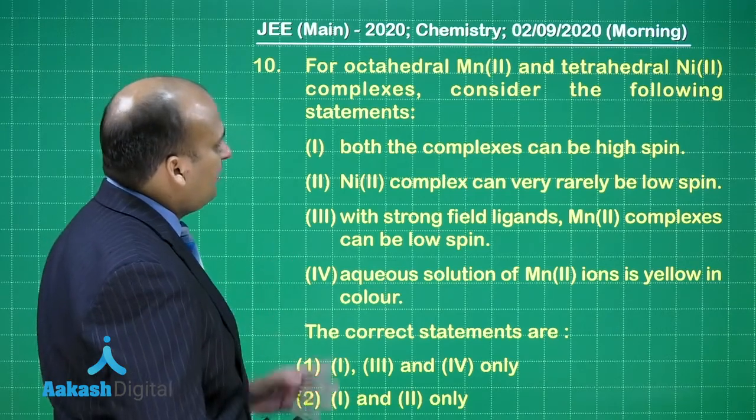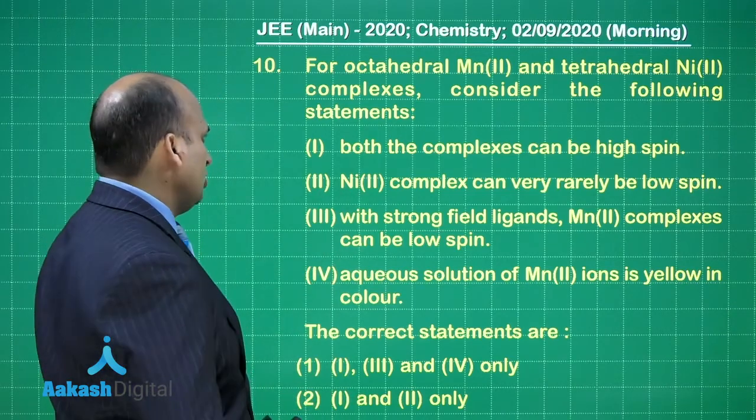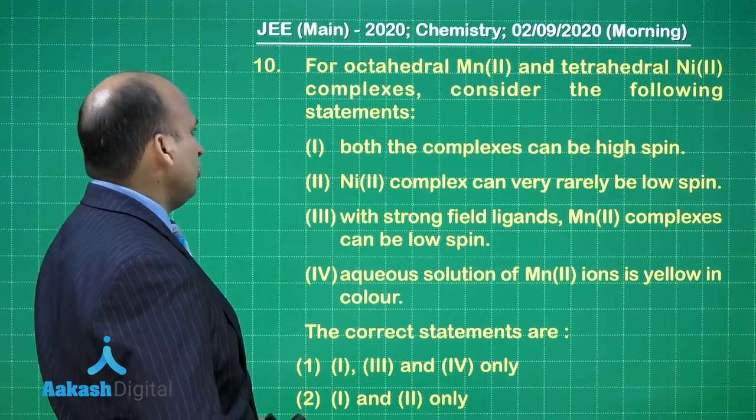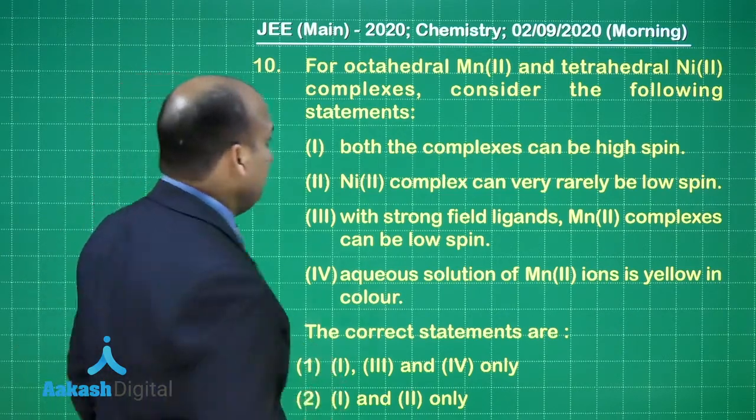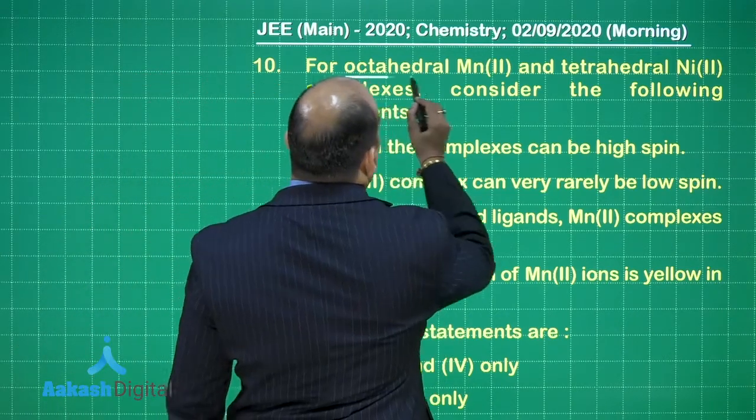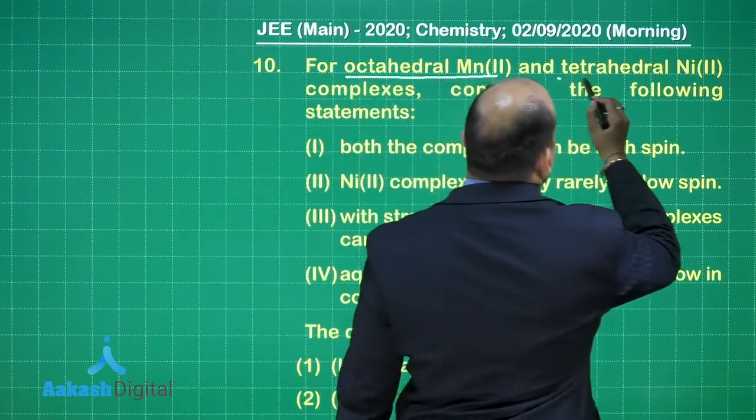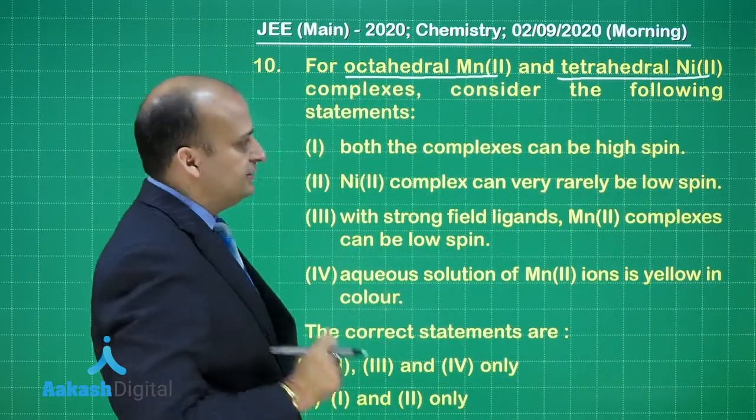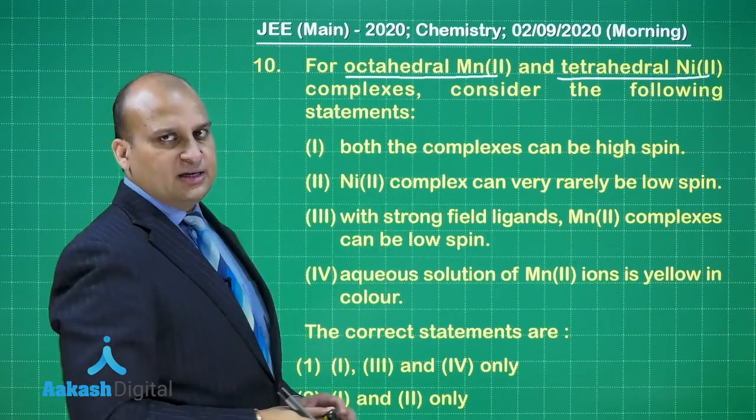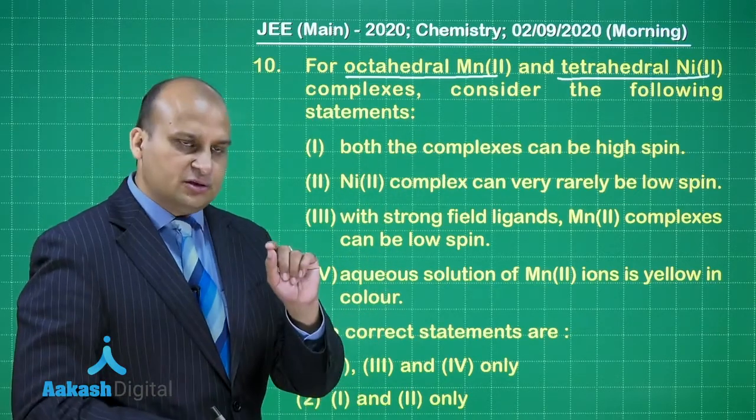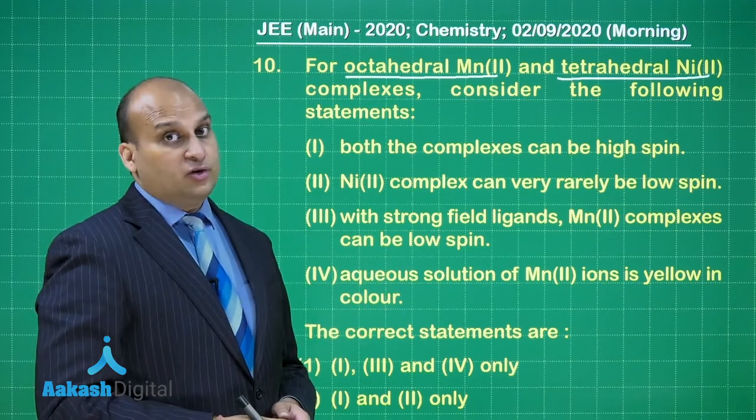The next question is for octahedral Mn2+ and tetrahedral Ni2+ complexes, consider the following statements. Read this statement very carefully. He is talking about octahedral Mn2+ and tetrahedral Ni2+. Whenever such questions are given, you should first calculate the electronic configuration.